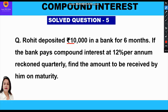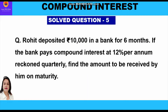In this question, the principal is rupees 10,000 — that is the amount Rohit has deposited in the bank. The time period is six months and the rate of interest is 12% per annum, reckoned quarterly, meaning it is compounded every three months. So in six months we will have two quarters: January to March is one quarter, and April to June is another quarter.